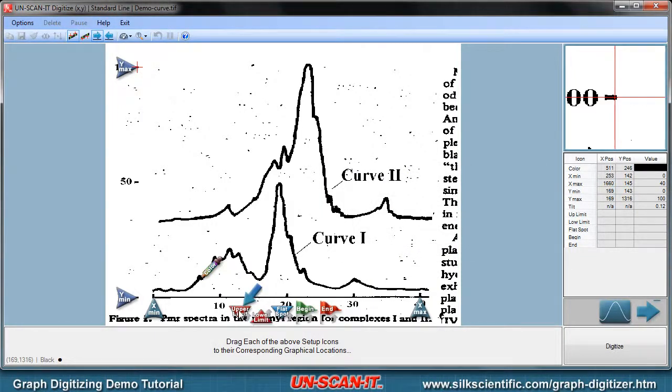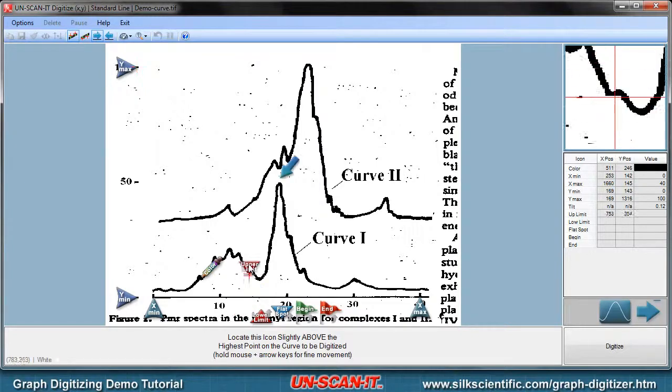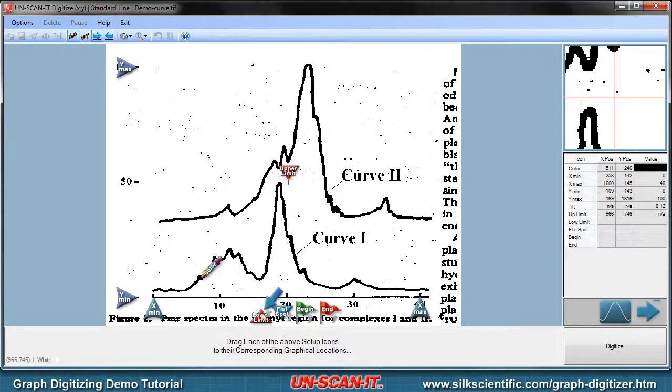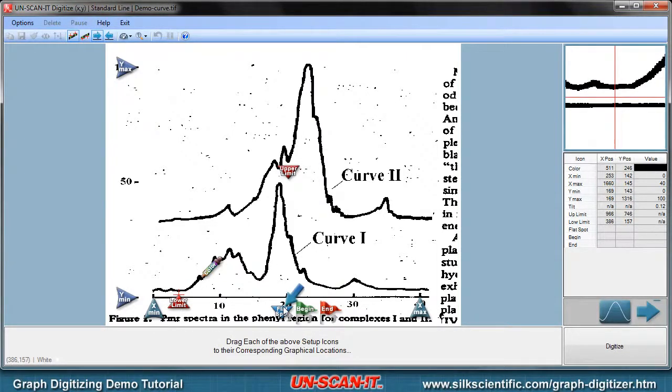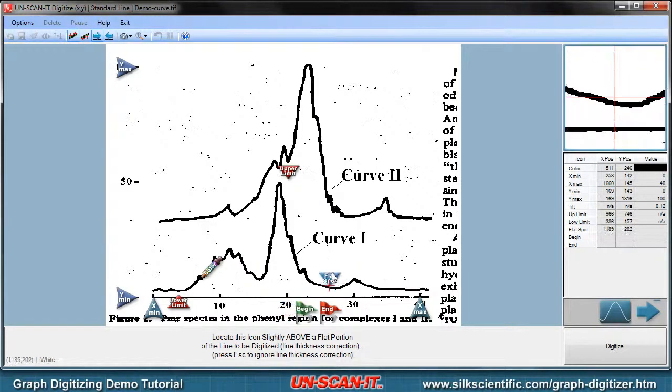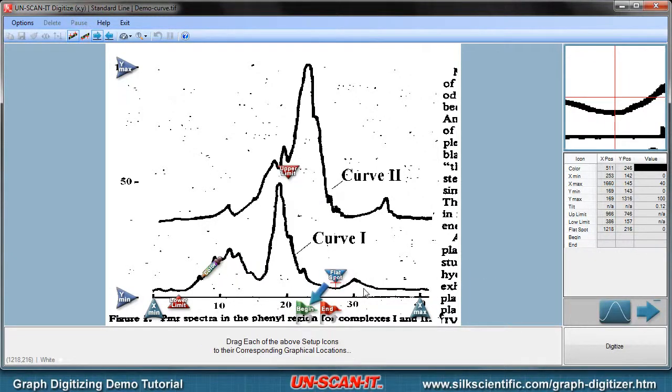The upper limit icon should be placed above the top of the data line and the lower limit icon should be placed below the bottom of the data line. The flat spot icon should be placed just above a relatively flat portion of the data line in order to measure the line thickness. The begin icon should be placed at the leftmost part of the data line and the end icon should be placed at the rightmost part of the data line.